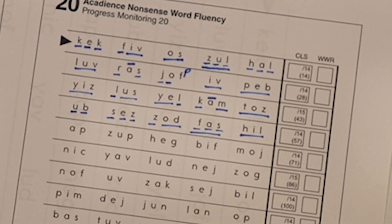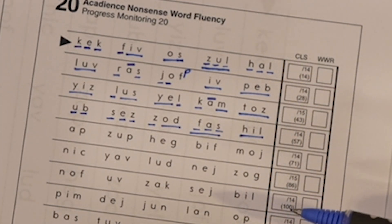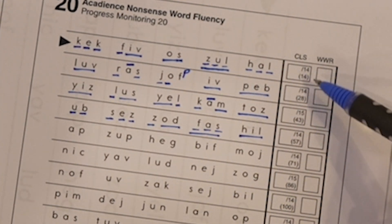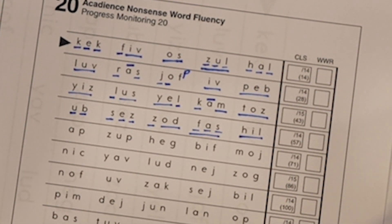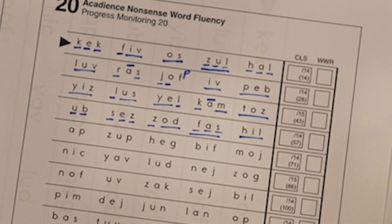Now you have all these lines here. What does that mean? There are two scores that you get from the nonsense word fluency test.